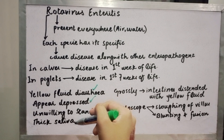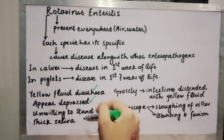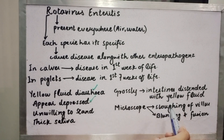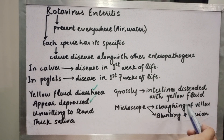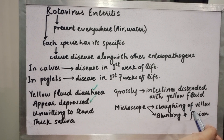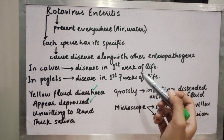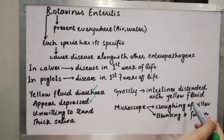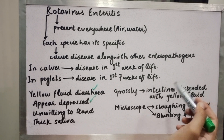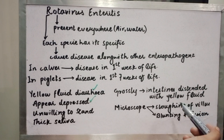There is thick sliver hanging from their lips. The intestine is distended with yellow fluid. Enteritis causes the intestine to be filled with yellow fluid in case of rotavirus.